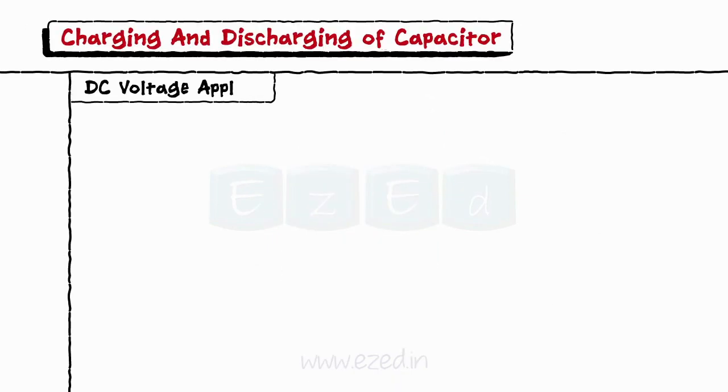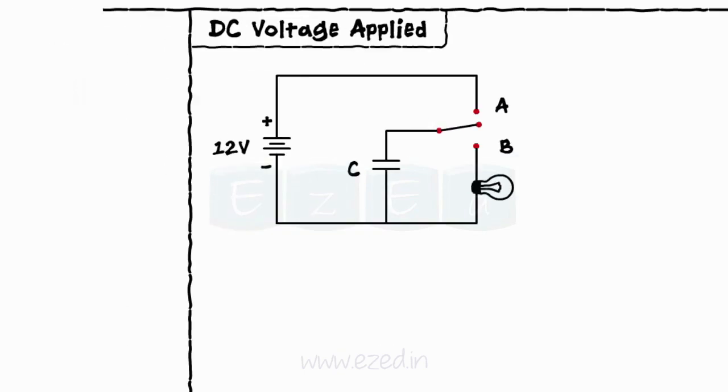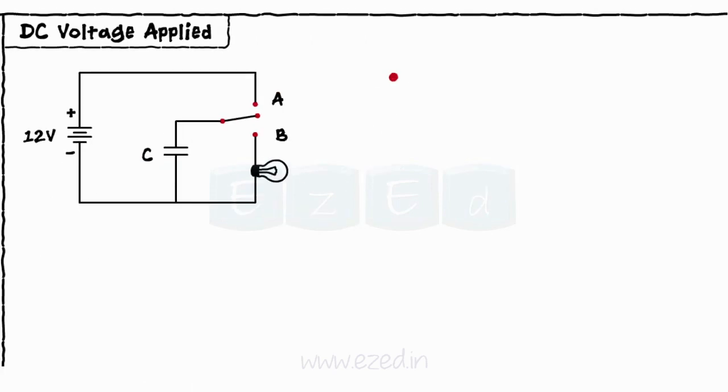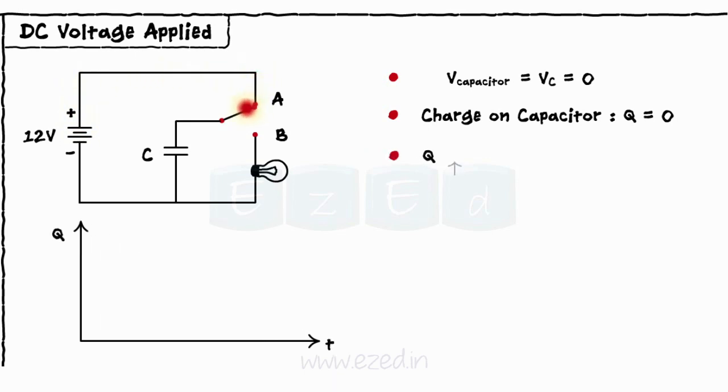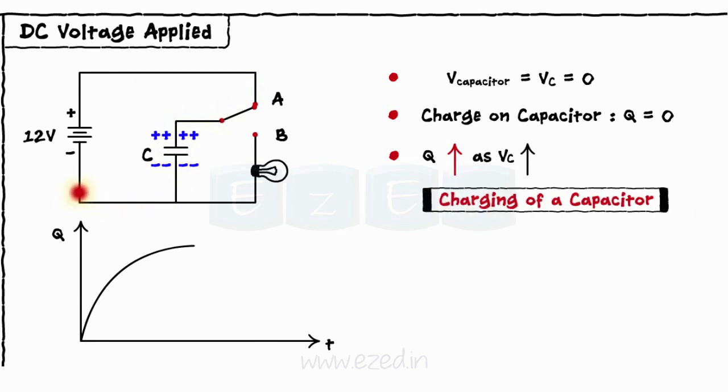First, we apply the DC voltage across a capacitor. Consider a circuit in which the capacitor is connected across a DC supply and a bulb is connected but the branch is kept open. Initially, the voltage across the capacitor is zero with zero charge on both the plates. When a capacitor is connected to a DC supply, the charge gets developed on both the plates and the current flow starts. This charge gradually increases as the voltage across the capacitor goes on increasing. This phase is called as the charging phase of a capacitor.